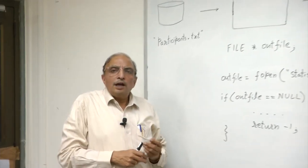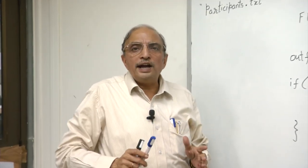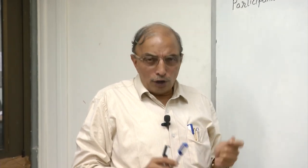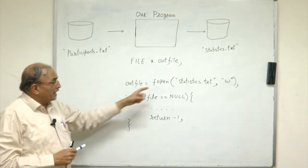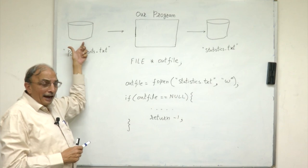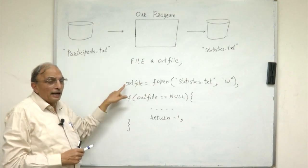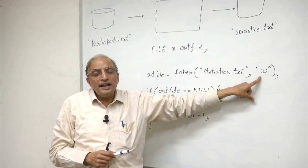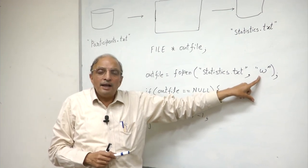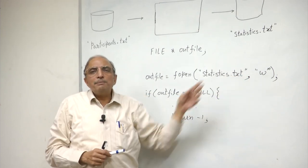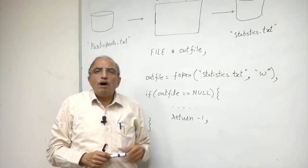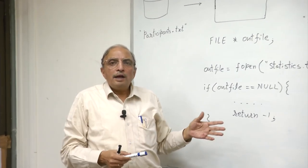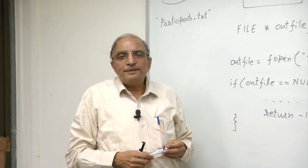With this, we have now understood how we can associate external files with internal file pointers. To recapitulate, we use the fopen statement to associate an actual file with our program pointer, and we indicate the mode in which the file is to be opened, which could be either 'r' for reading and 'w' for writing. There are additional indicators that can be given in this mode. All of these are described in a separate handout which is included in the course material. Thank you.